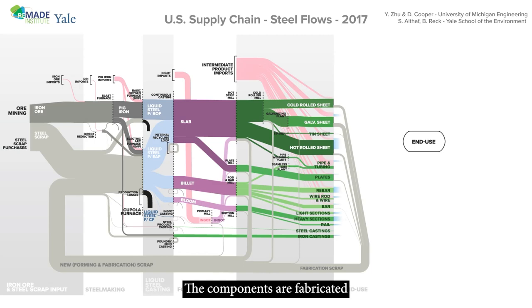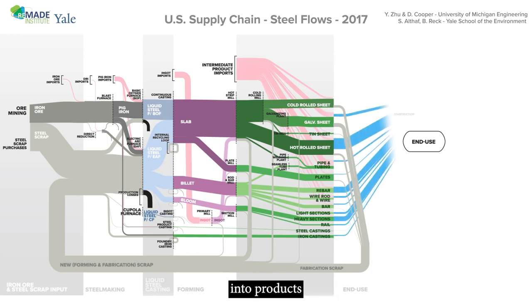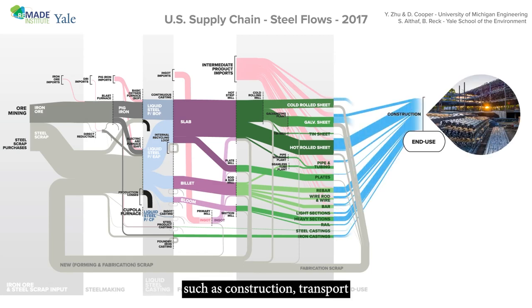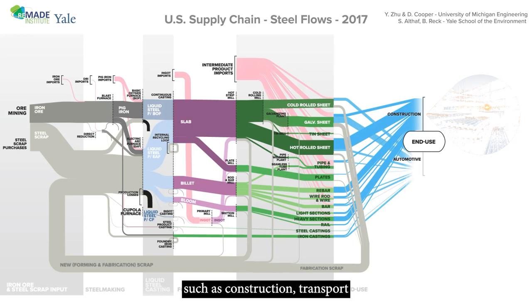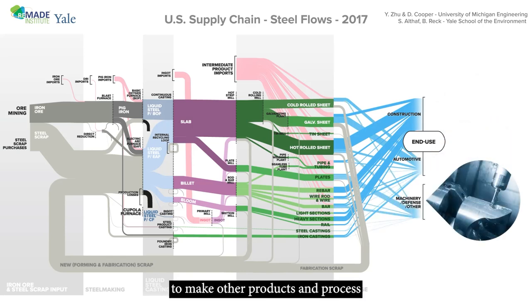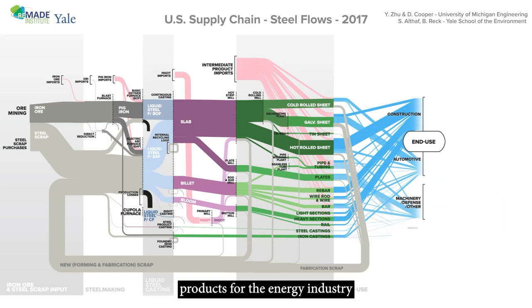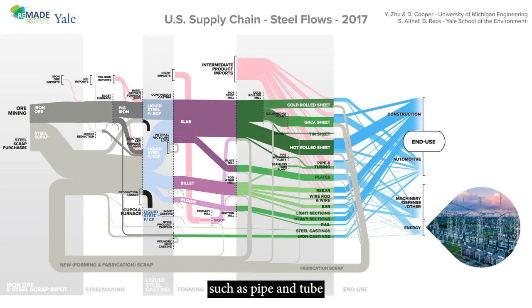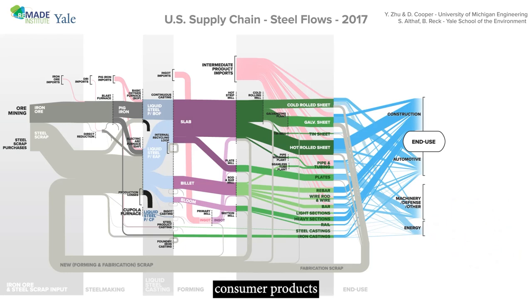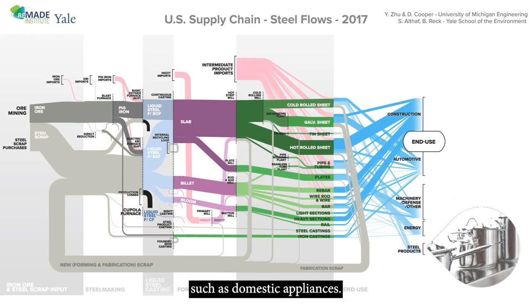Components are fabricated into products for a range of different sectors, such as construction, transport, and in particular automotive vehicles, machinery to make other products and process other materials, products for the energy industry such as pipe and tube, and a wide range of steel consumer products such as domestic appliances.